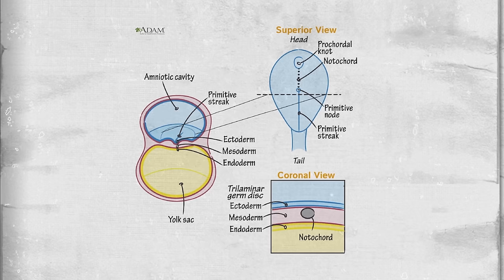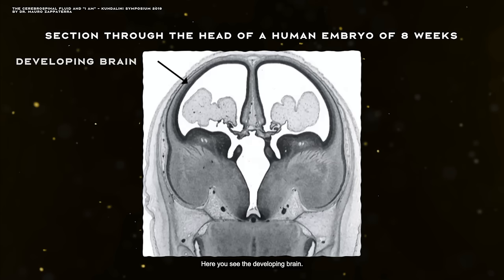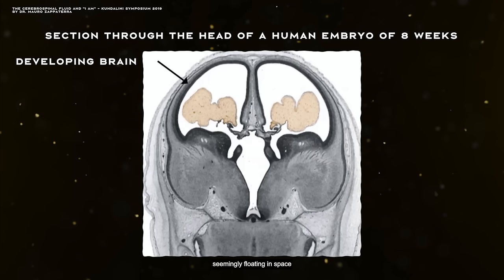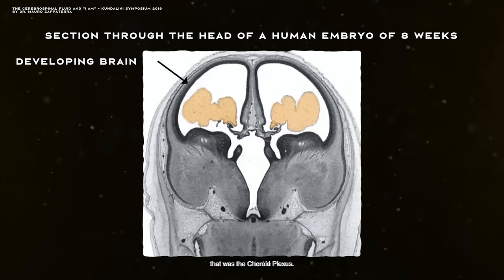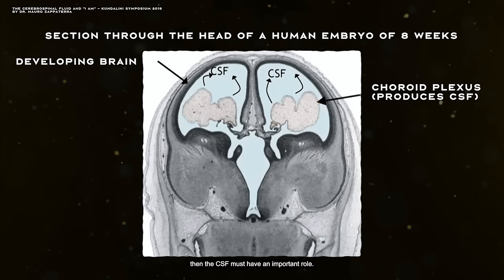This is a section through the head of a human embryo at eight weeks of development, showing the developing brain. There's a thin structure on top — a cauliflower-like structure seemingly floating in space. That was the choroid plexus, which produces CSF. If the structure that makes the CSF was that large, then the CSF must have an important role. Essentially, our entire developing nervous system is bathed in cerebrospinal fluid.